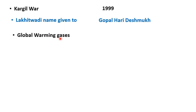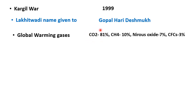Global warming gases — यह topic हर competitive exam में आता है। Major global warming gas कौन सी है? CO2 is 81%, then CH4 (methane) 10%, nitrous oxide 7%, CFCs (chlorofluorocarbons) 3%. CFCs are also used as a refrigerant — so the question 'as a refrigerant कौन सी gas use होती है' आता है। Methane का formula CH4 है। Paper में आया था: major global warming gas कौन सी है?